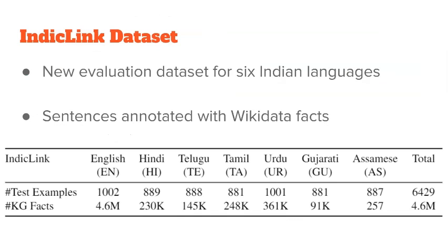We release the IndicLink dataset to evaluate performance on this task for six Indian languages, where sentences are annotated with their corresponding Wikidata facts. We cover the following Indian languages: Hindi, Telugu, Tamil, Urdu, Gujarati, and Assamese.